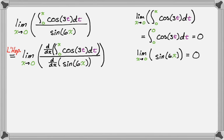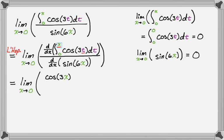Now I need to take the derivative of the top. I look at the upper bound, which is x, and replace every t in the integrand with that upper bound. So cosine of 3t becomes cosine of 3x. Then I multiply by the derivative of the upper bound — the derivative of x is just 1. I usually write it in so I don't forget when the derivative is not 1. For the bottom, the derivative of sine of something is cosine of that thing times its derivative, so I get 6 cosine of 6x.